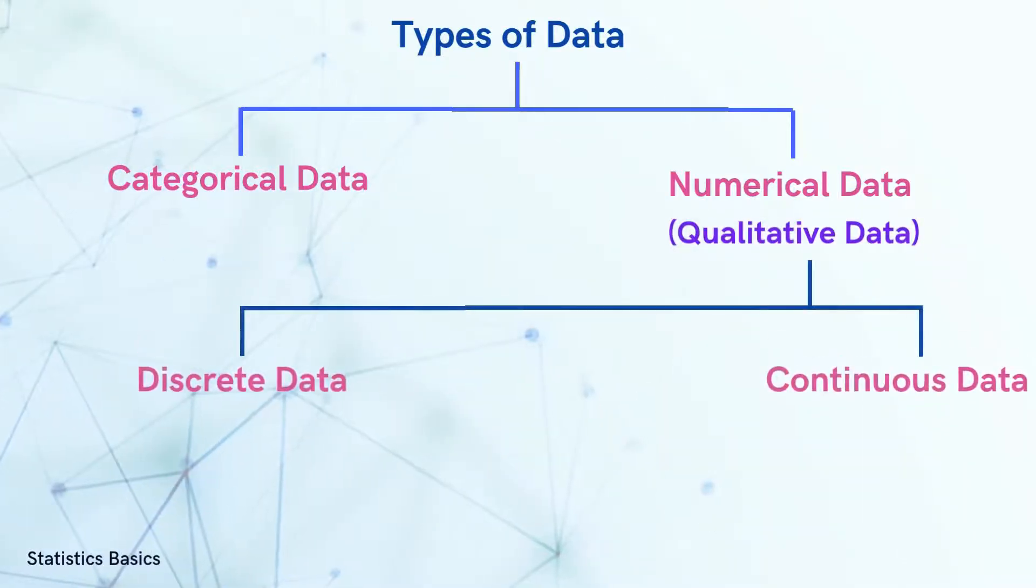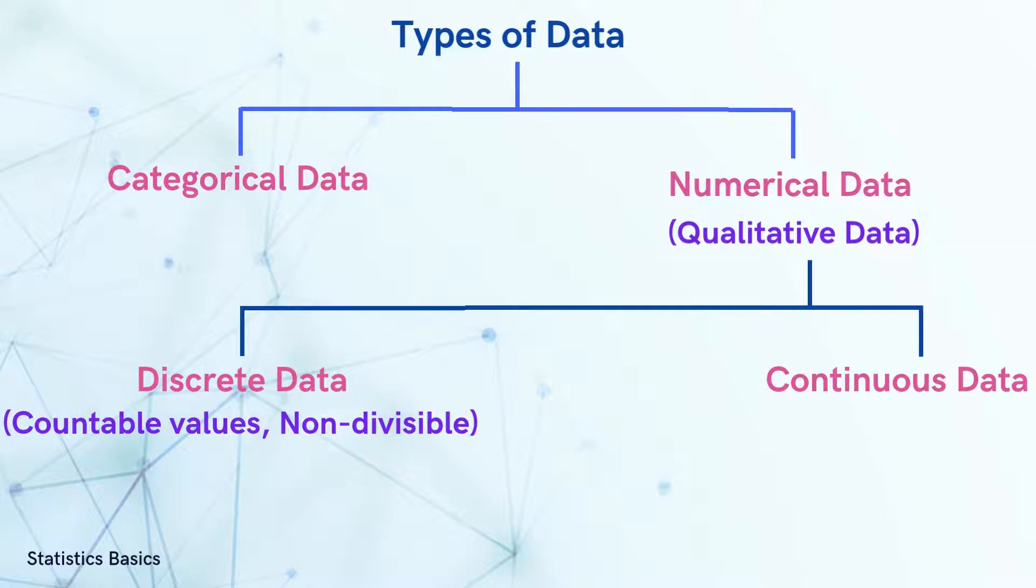We can further divide numerical data into two types, discrete and continuous. Discrete data consists of countable values that cannot be subdivided. Imagine counting the number of students in a class, you can't have half a student.